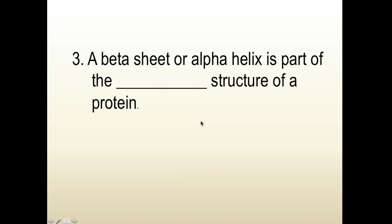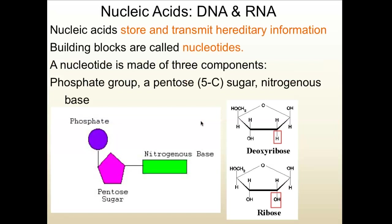A beta sheet or alpha helix is part of the secondary structure of a protein. Let's move on to nucleic acids. Nucleic acids are also polymers. The monomers here are called nucleotides — the building blocks are called nucleotides. This is a picture of a nucleotide, and you want to know the three parts of a nucleotide because we're going to talk about this when we do DNA.